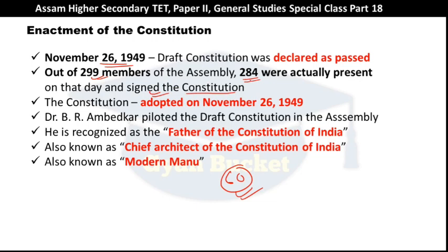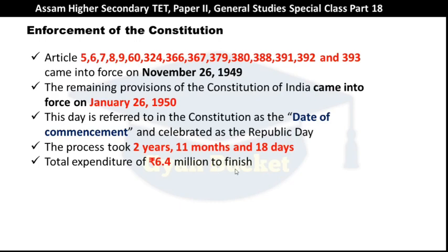A very important question: how many members signed our Constitution? The answer is 284. On 26 November 1949, our Constitution was adopted. Dr. Ambedkar is called the Father of the Constitution of India and the Chief Architect of the Constitution of India.